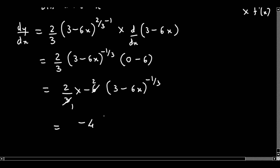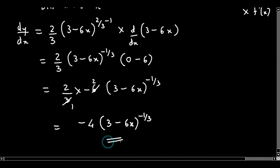That gives us minus 4 times 3 minus 6x raised to minus 1 by 3. So this is the value for dy/dx.